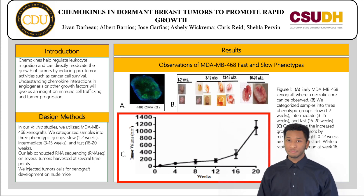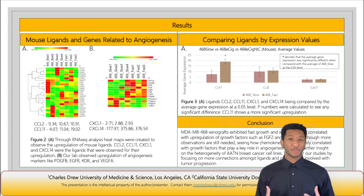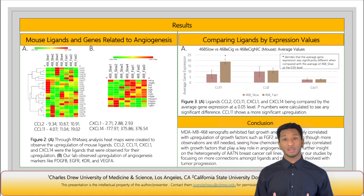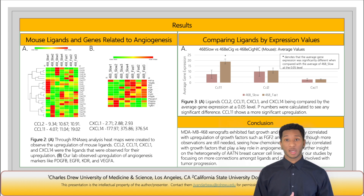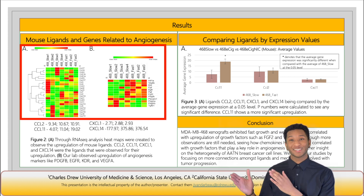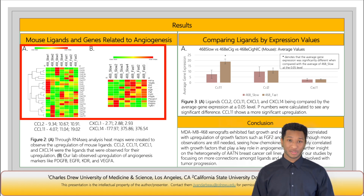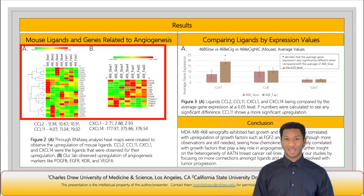The next slide shows more results in the form of RNA sequencing heat maps. These heat maps show ligands and genes that relate to angiogenesis from immunodeficient mice, and we also examined the human ligands and receptors as well. On the heat map, the mouse ligands are in picture A, and in picture B on the right side, you'll find the angiogenesis markers like VEGF, EGFR, and PDGFRB, also from the mouse. The importance of these heat maps is seeing the upregulation in the intermediate and fast-growing tumors, as this suggests that they are being expressed.